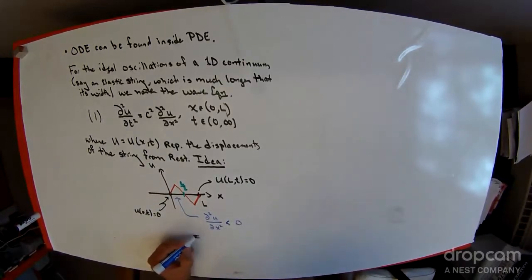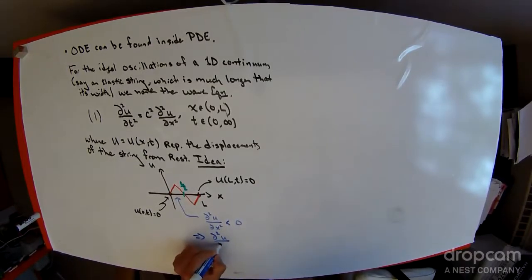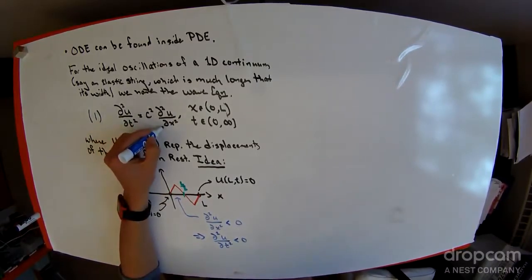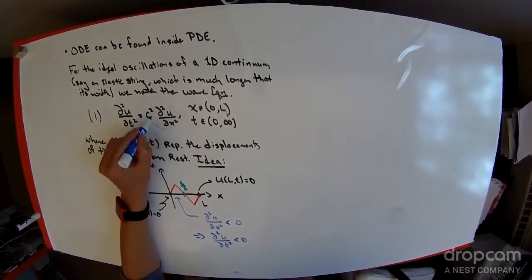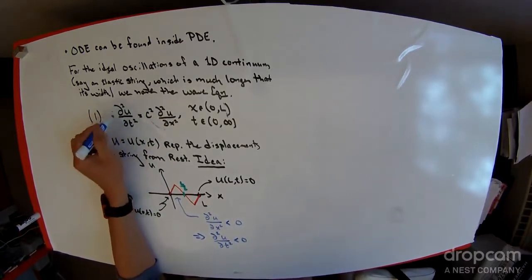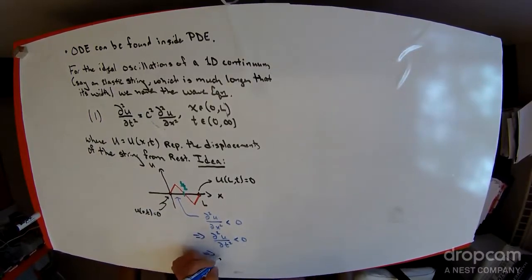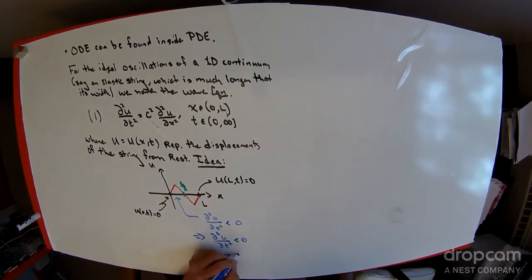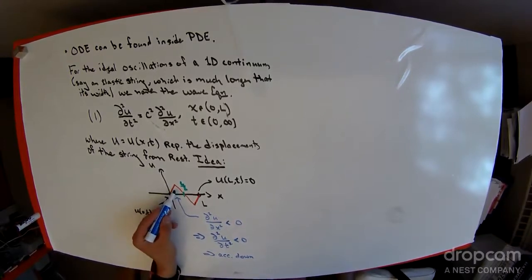If the second derivative is a negative quantity, then the second partial of u with respect to t is also negative, because this second partial with respect to space is negative, c squared is positive, so negative times positive is again negative. What this means is that for all points between x equals 0 and x equals L over 2, the u function has a negative acceleration, so there is an acceleration down.